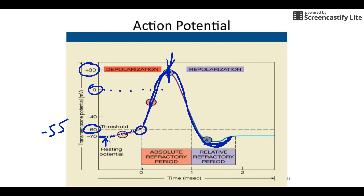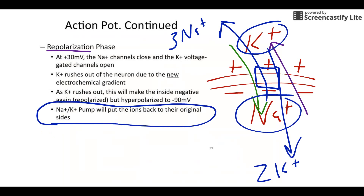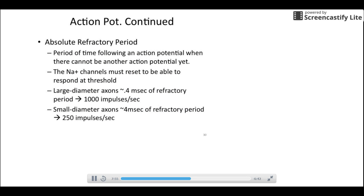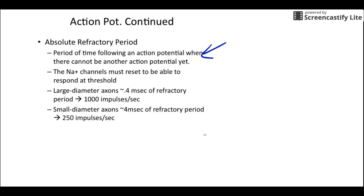Now we're going to talk about these two vocab words: absolute refractory and relative refractory periods. Absolute refractory period is a period of time when you cannot have another action potential — it actually helps prevent the signal from going backwards. The relative refractory period is the time needed to reset the sodium channels. And in our best axons, our best neurons, we can have a thousand impulses per second.